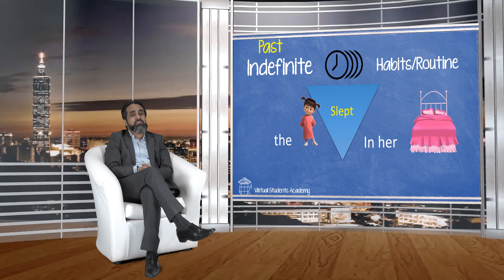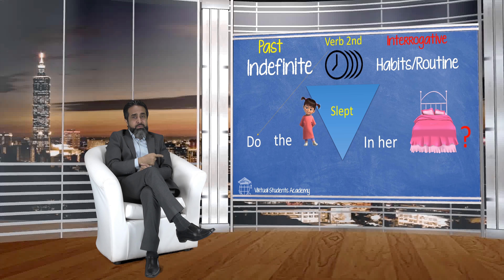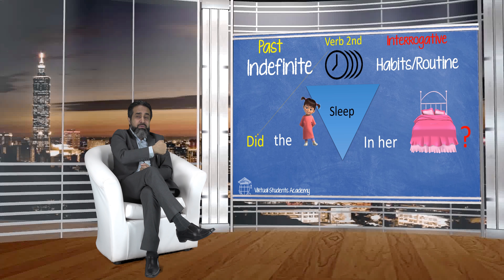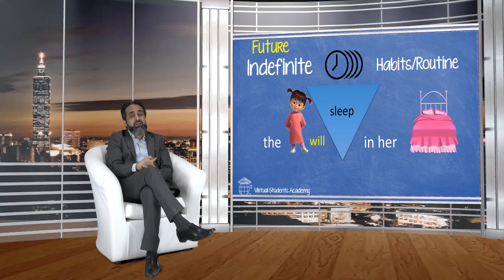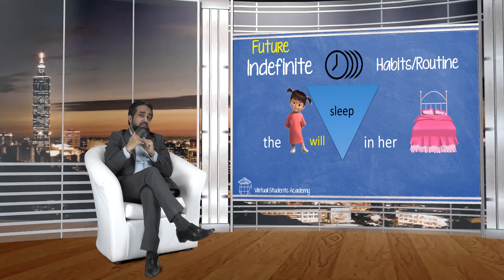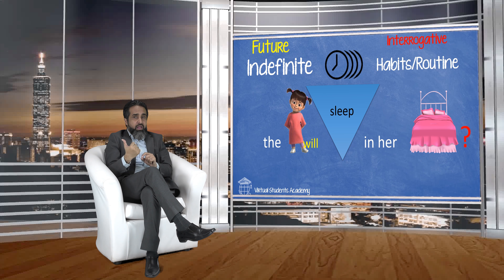For past indefinite: 'The girl slept in her bed.' Using 'did,' the second form 'slept' changes back to first form: 'Did the girl sleep in her bed?' For future indefinite: 'The girl will sleep in her bed' becomes 'Will the girl sleep in her bed?'